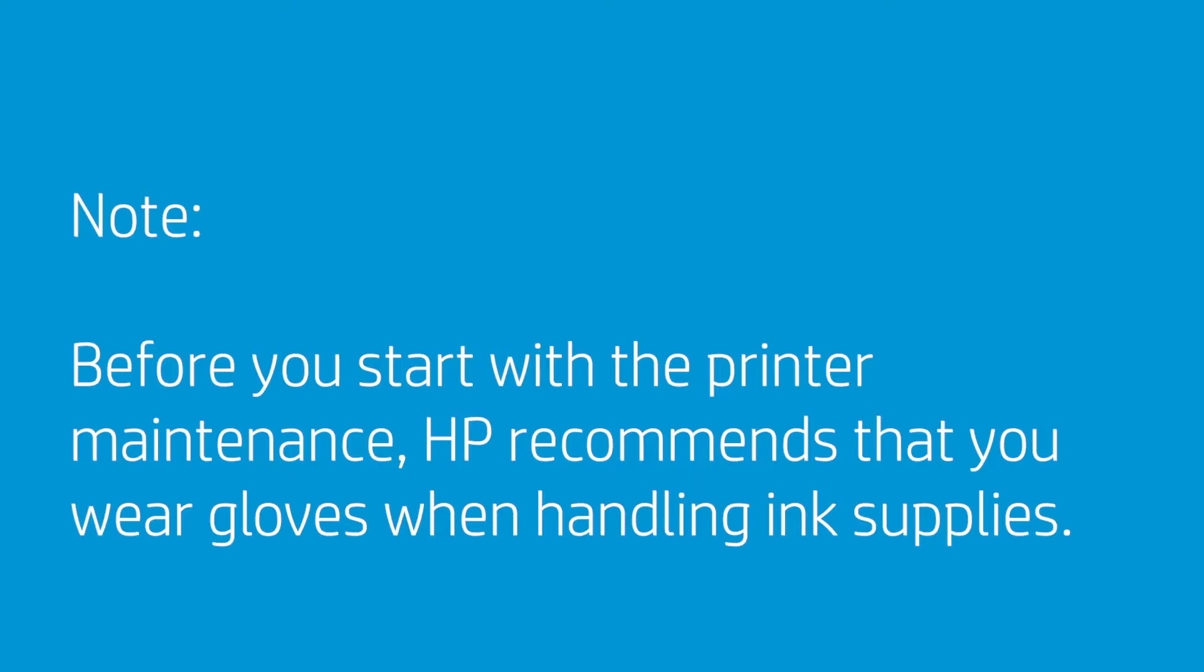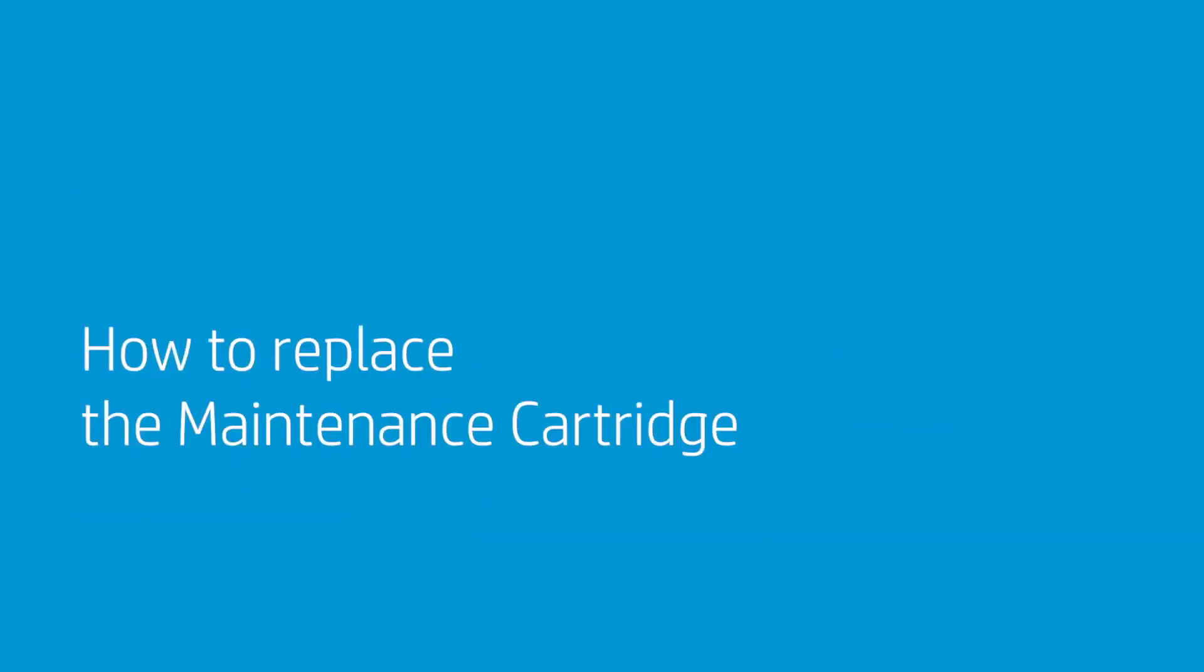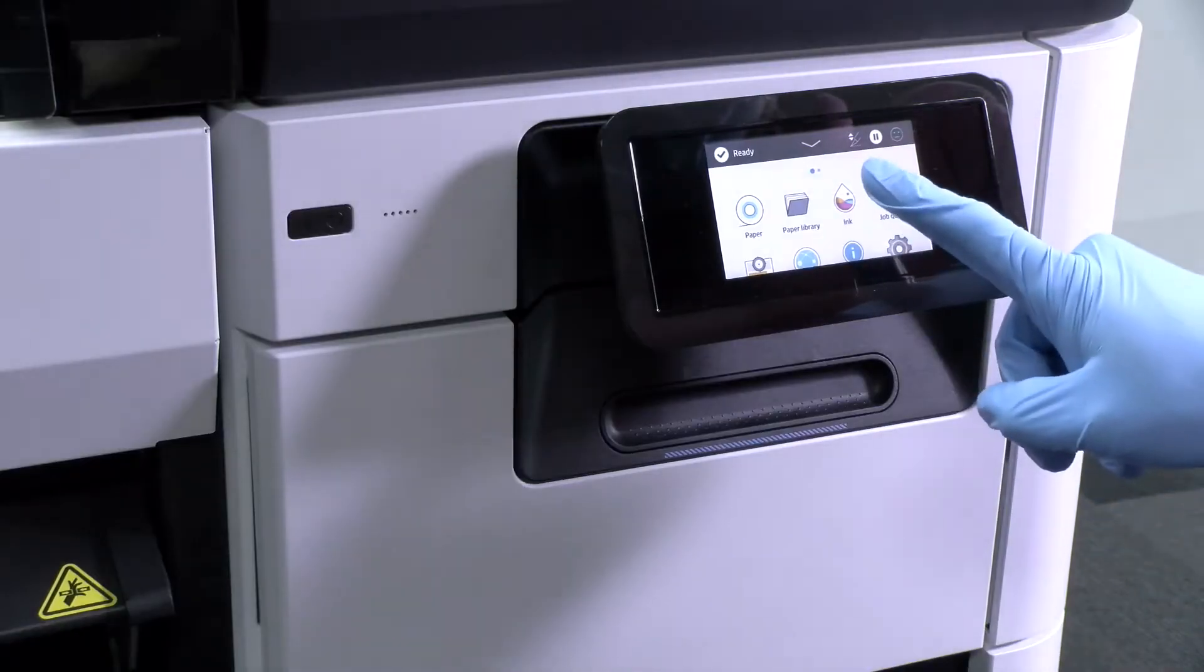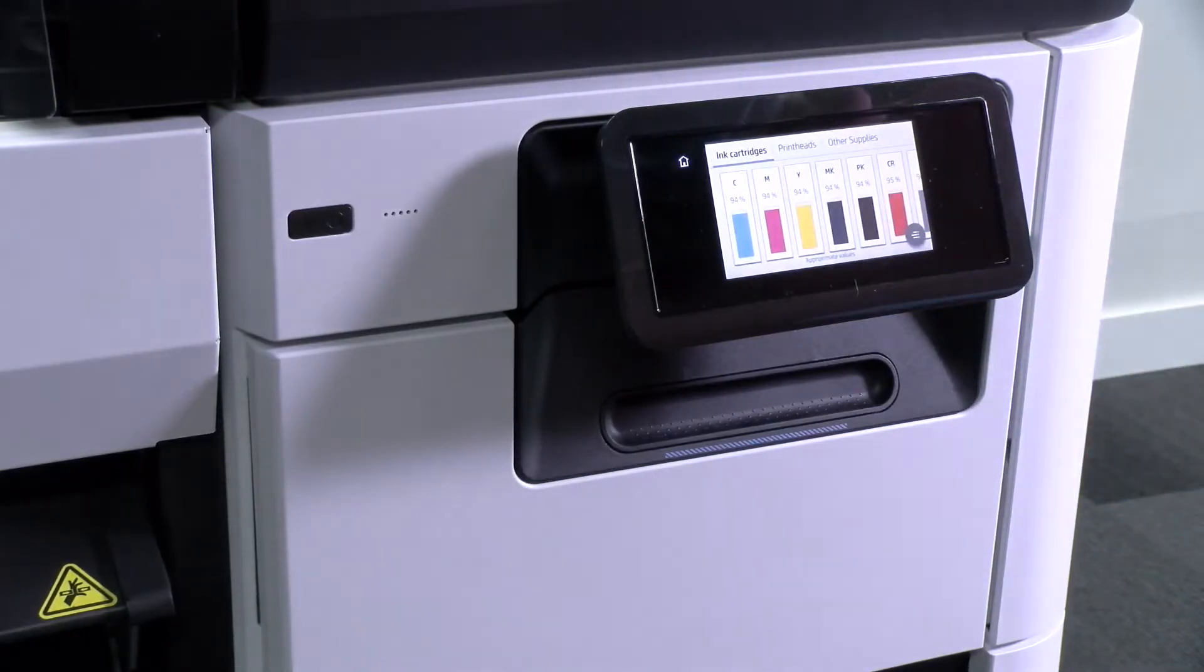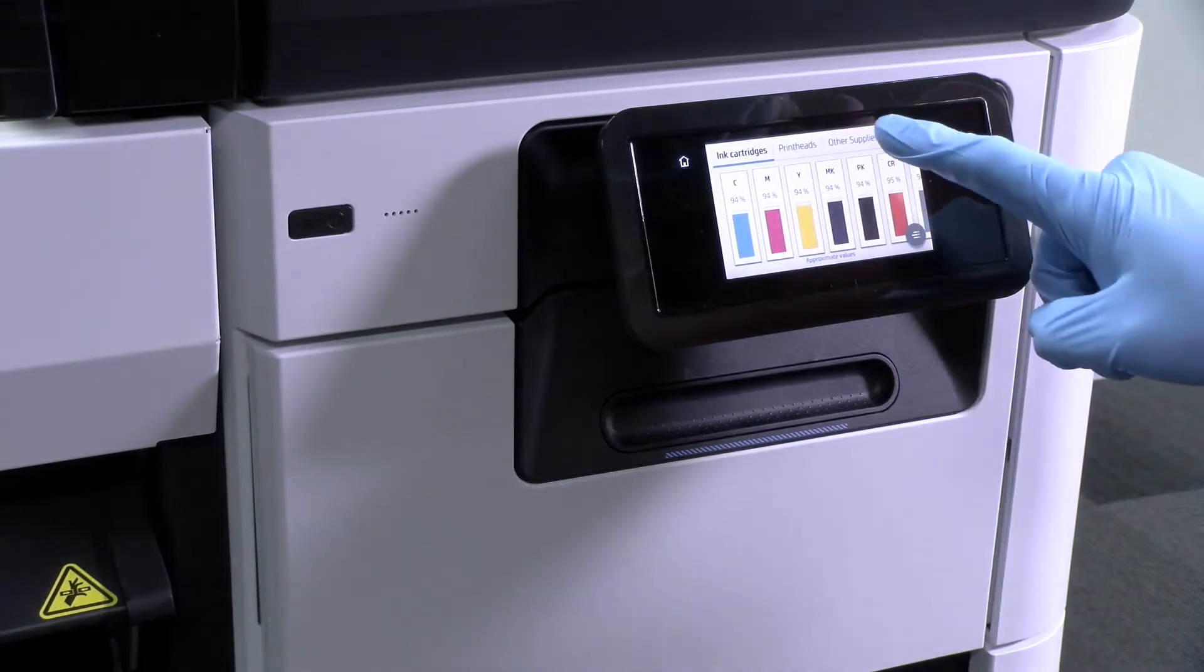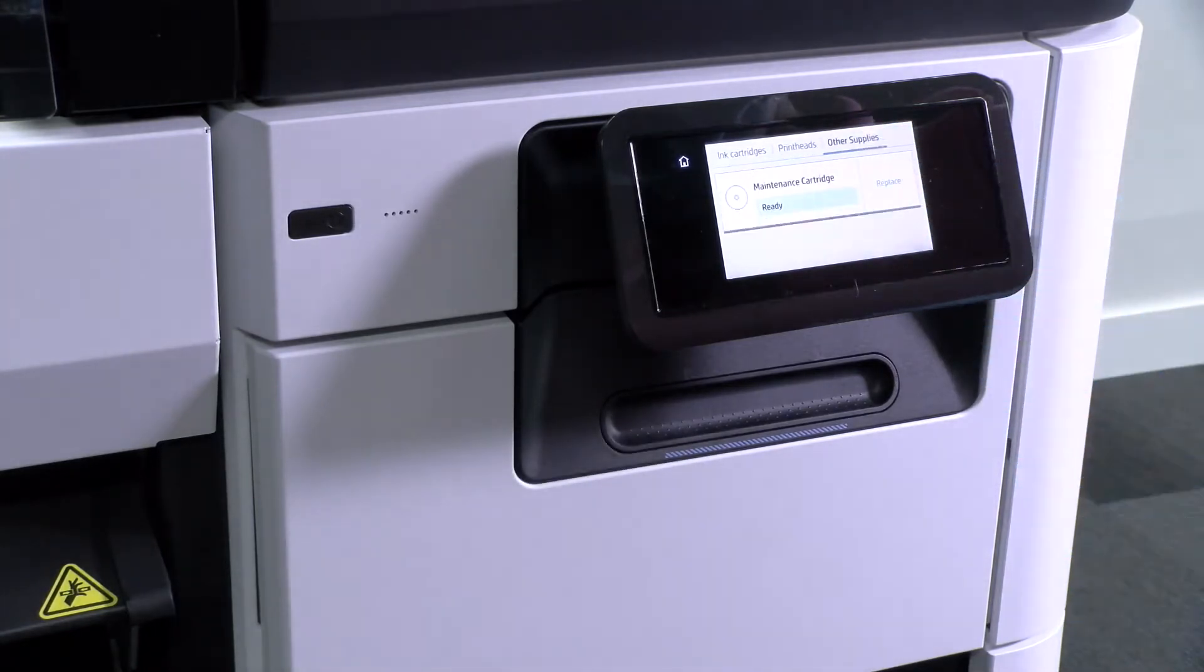Before you start with the printer maintenance, HP recommends that you wear gloves when handling ink supplies. To replace the maintenance cartridge, go to the printer's front panel and tap the inks icon. Then at the left-hand side of the screen, select the other supplies tab, then select maintenance cartridge, tap replace, and finally press the blue arrow.